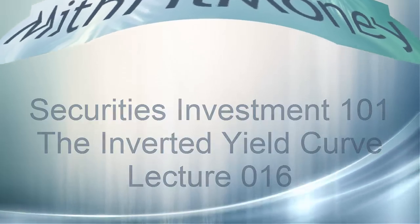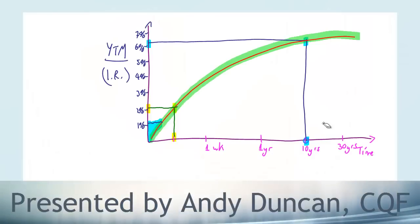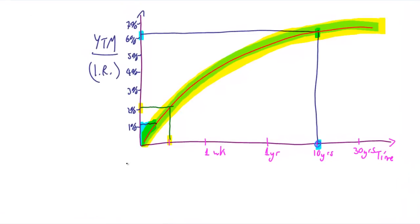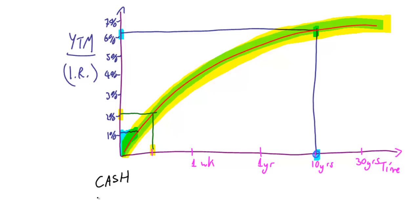I want to go back to a previous lecture in which we saw the typical yield curve shape. Here it is, the normal shape that we see with the yield curve. At the left hand end we have cash and uncertainty, and at the right hand end we have liabilities and risk.